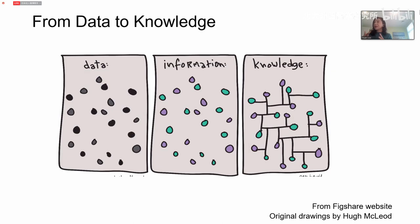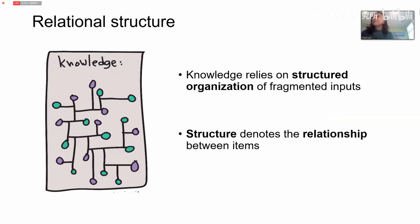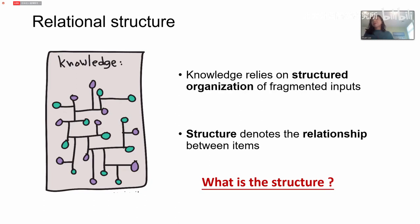Knowledge relies on structured organization of fragmented input — we figure out the underlying lines and underlying structure for the fragmented information. Structure actually denotes the relationship between items — the lines, regardless of the items themselves. For example, green could be replaced by red, but we want to know the underlying structure. Structural information is more stationary or constant. Structure is quite an abstract concept, so I would like to show some examples from cognitive psychology.